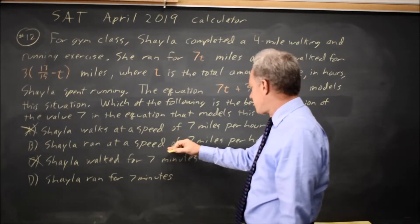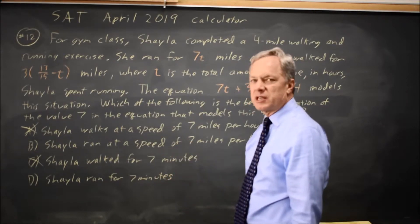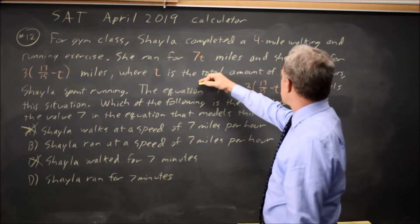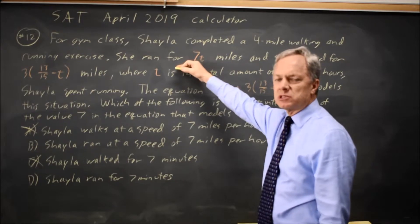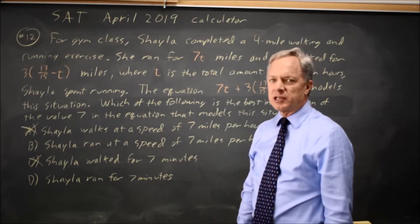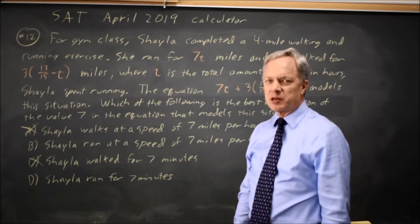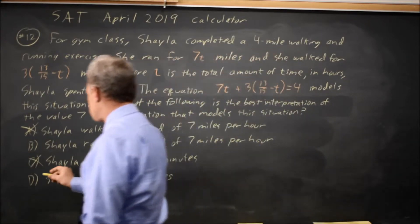Now, the question is, did she run at a speed of 7 miles per hour, or did she run for 7 minutes? We're told t is the amount of time in hours Shayla spent running, and it doesn't make sense to multiply her time running in hours by her time running in minutes, so choice D does not sound reasonable.